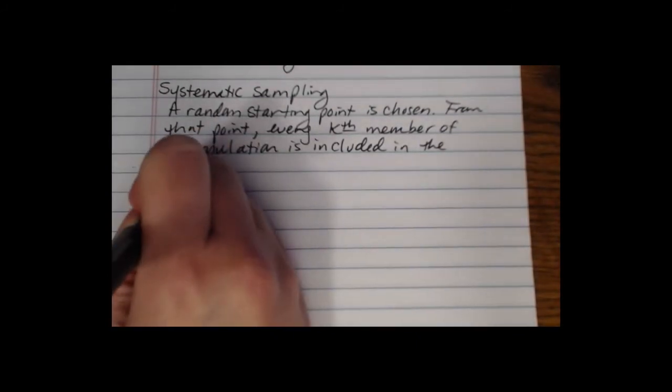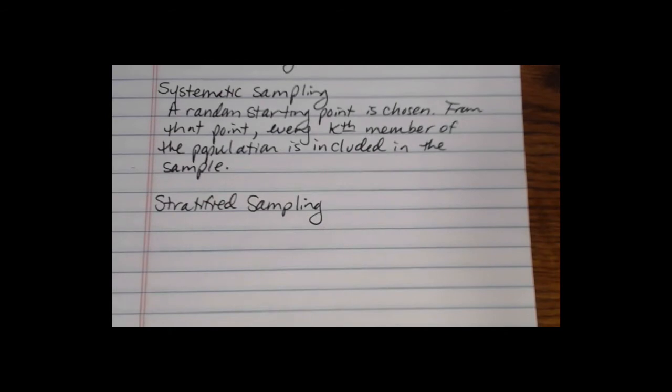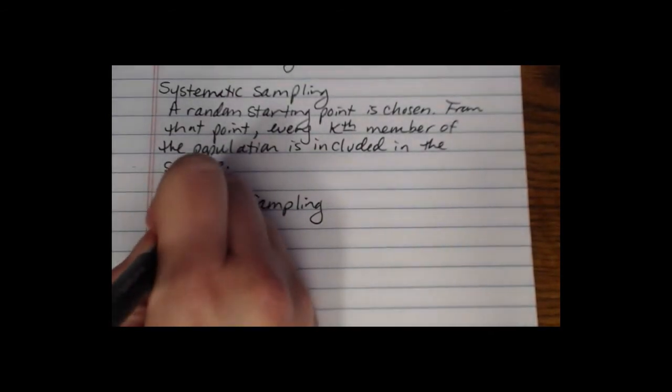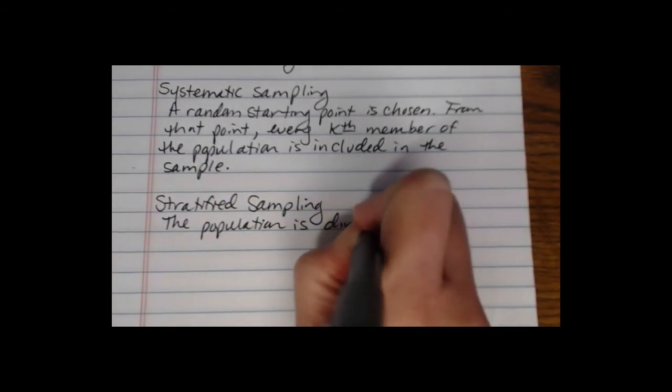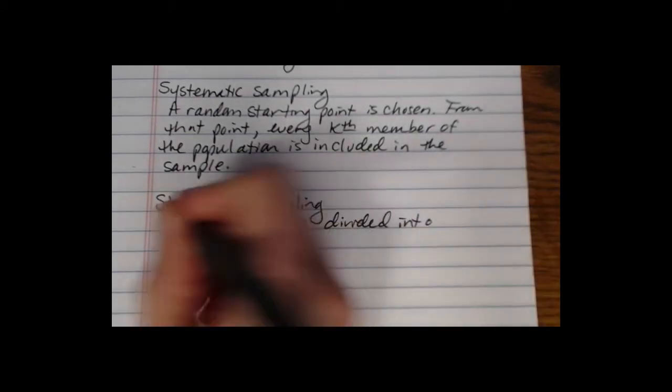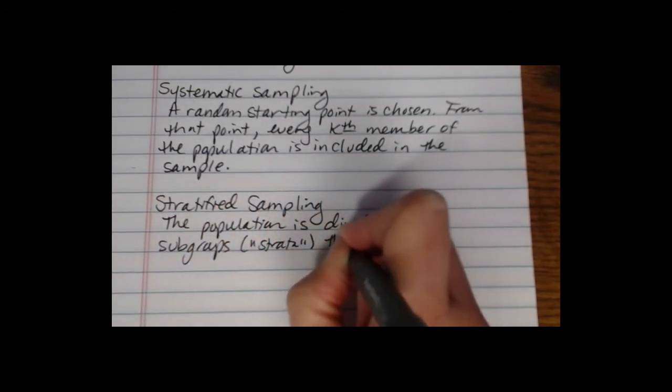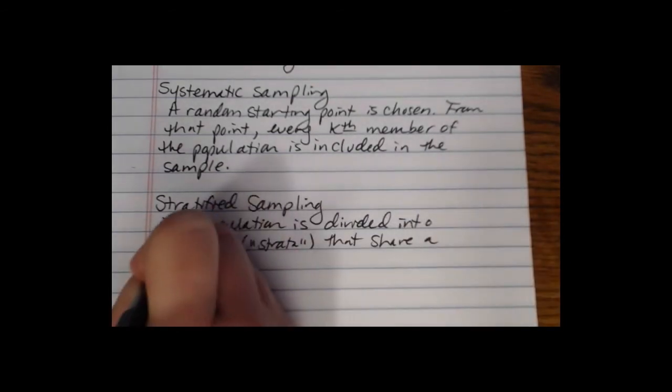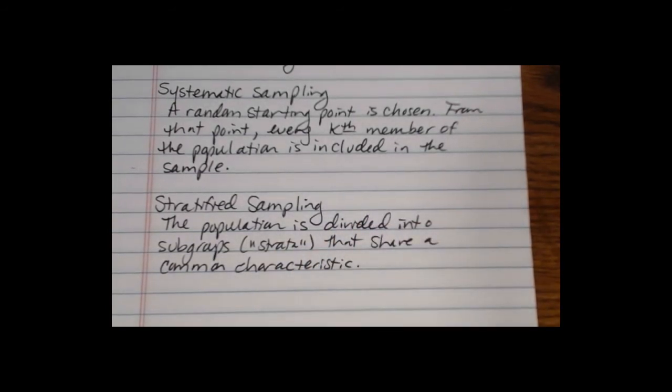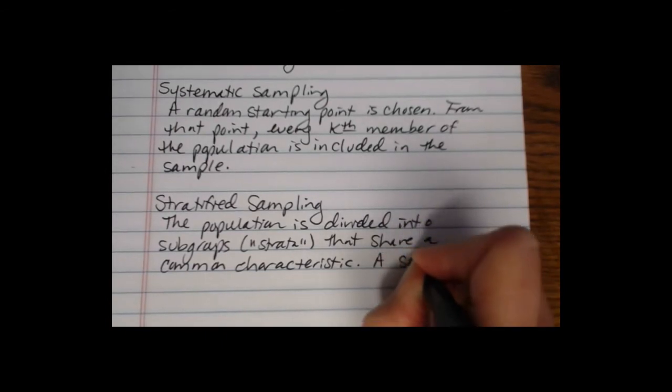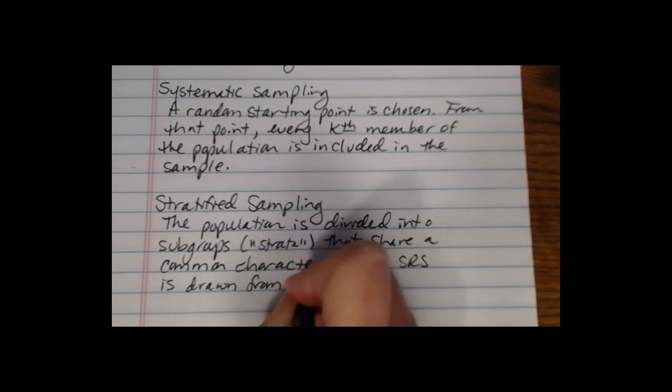Then there is stratified sampling. In stratified sampling, the population is divided into subgroups called strata that share a common characteristic, and then a simple random sample or SRS is drawn from each stratum.